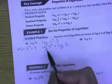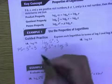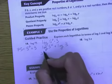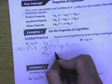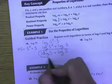Now, I can't do anything further with this log, but this one has a power, so I can take this 2 and bring it out front as a coefficient now. So it would be 2 times the log of 5 plus the log of 3.